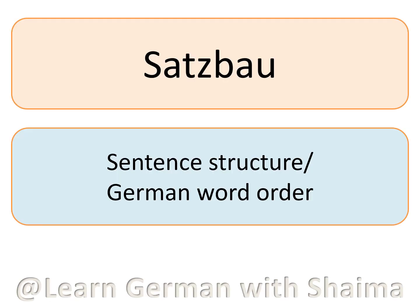As already mentioned, Satzbau is the sentence structure, or you can also say the German word order. Satzbau is how we place the words in a sentence.